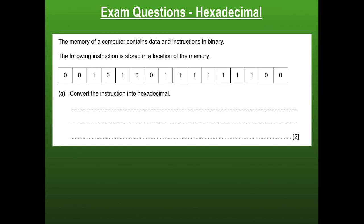Okay, so with that let's get into a couple of questions. Here's the first one: the memory of a computer contains data and instructions in binary. The following instruction is stored in memory — convert the instruction into hexadecimal. Hexadecimal is one of the easiest to convert. Binary to hexadecimal is so easy. Just look at how I'm breaking this up — if you break each nibble up, a nibble is four bits, each one will represent the hexadecimal value for that position.